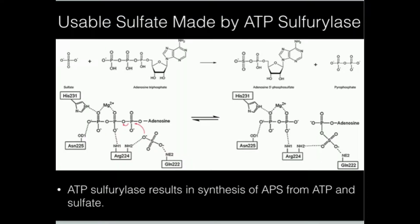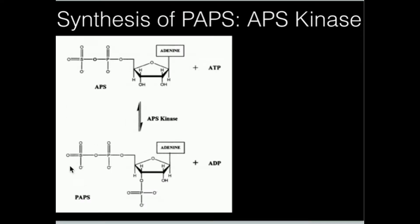I mentioned at the end of that video I would show you how sulfate is assimilated into a form that's readily usable and transferable. What we do is we have to take this sulfur and make a molecule called PAPS. PAPS stands for phosphoadenosine phosphosulfate, and PAPS is this molecule down here.